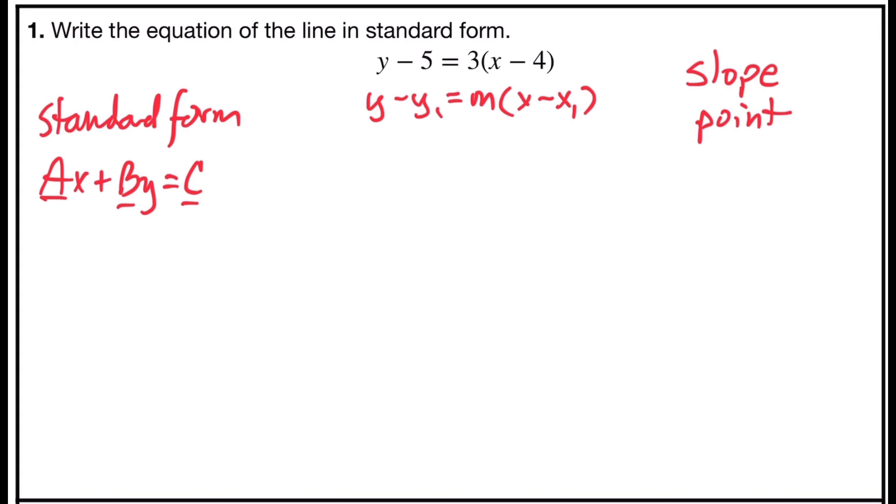So we're going to take and transform this equation, y minus 5 equals 3 times x minus 4, into standard form. So we'll start by the distributive property. y minus 5 remains on the left side of the equation.